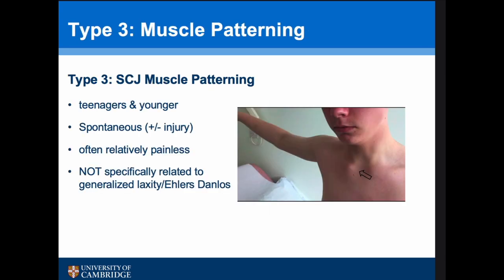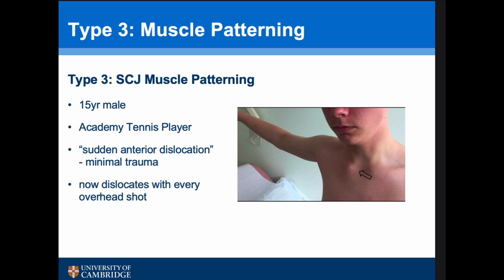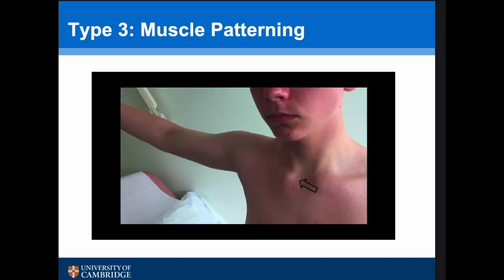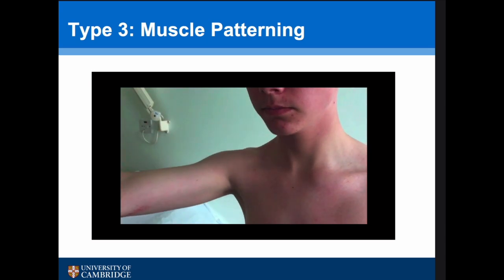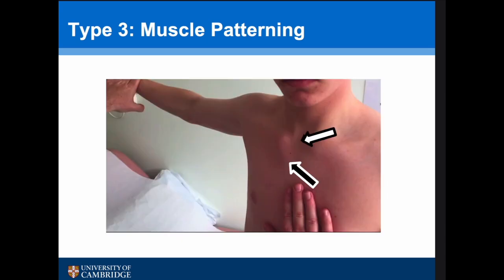Type 3 muscle patterning SCJ problems are probably the most common we see. They tend to occur in teenagers and younger patients who give a history of this spontaneously occurring — sometimes related to injury, sometimes literally happening overnight. It's often relatively painless and not specifically related to generalised laxity or Ehlers-Danlos. This 15-year-old academy tennis player noticed a sudden anterior dislocation of his right SCJ with minimal trauma, and now it dislocates every time with any overhead shot.